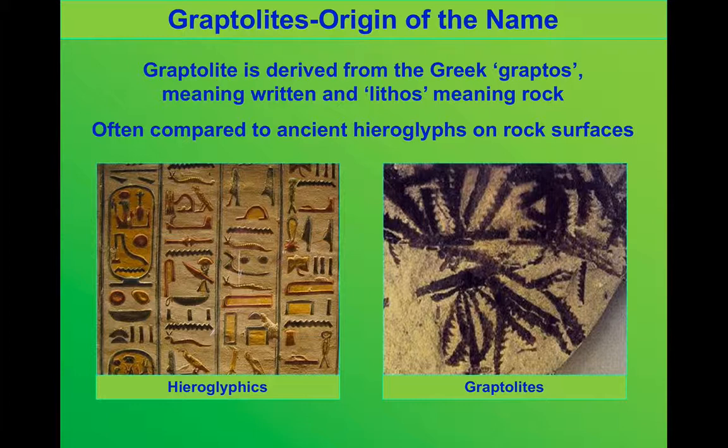When we find them, we find them as sort of faint markings, usually on very fine-grained rocks like black shales. They've been likened to Egyptian hieroglyphics, hence their name.